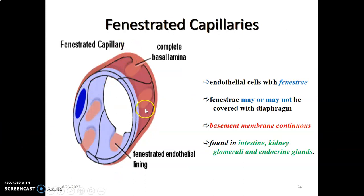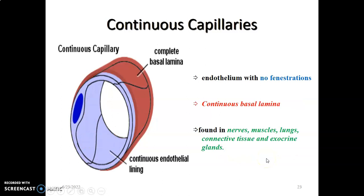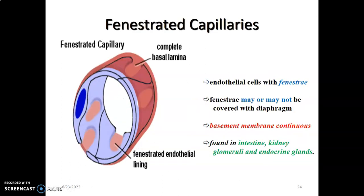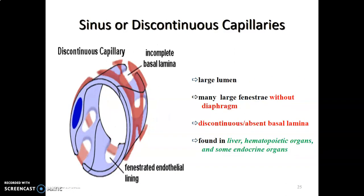Fenestrated capillaries are found in the intestines, in the glomeruli of the kidney, and in endocrine glands. Remember, exocrine glands had continuous capillaries, while endocrine glands have fenestrated capillaries. We also see them in the intestine and in the glomerulus of the kidney.